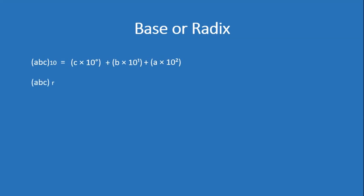Now, the same number ABC where A, B and C are 3 unique digits but in base R — meaning this is not a decimal number. In a number system whose base is R, we can represent ABC base R as C into R to the power 0 plus B into R to the power 1 plus A into R to the power 2. Comparing these two equations, in the first equation the base was 10, so it was 10 to the power 0, 10 to the power 1, 10 to the power 2. In the second equation, the base is R, so 10 is replaced by R throughout.